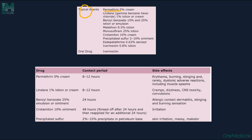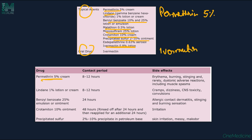Topical agents include permethrin 5%, which is most commonly used and must be left on for 8 to 12 hours; side effects include erythema, burning, stinging, and dystonic reactions. Lindane 1% is left for 8 to 12 hours but can cause cramps, dizziness, CNS toxicity, and convulsions. Benzyl benzoate 25% is left for 24 hours and can cause allergic contact dermatitis and burning. Crotamiton 10% ointment is applied for 24 hours, washed, and reapplied for another 24 hours. Precipitated sulfur 2–10% in petrolatum can cause skin irritation and is messy and malodorous. Malathion 0.5%, monosulfiram 25%, and oral ivermectin are also available treatment options.